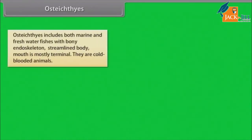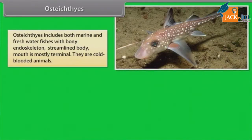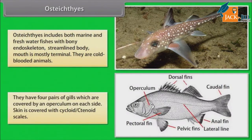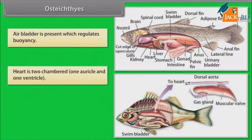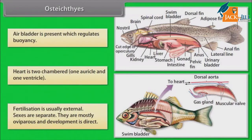Osteichthyes includes both marine and freshwater fishes with bony endoskeleton and streamlined body. Mouth is mostly terminal. They are cold-blooded animals. They have four pairs of gills, which are covered by an operculum on each side. Skin is covered with cycloid or ctenoid scales. Air bladder is present, which regulates buoyancy. Heart is two-chambered — one auricle and one ventricle. Fertilization is usually external. Sexes are separate. They are mostly oviparous and development is direct.